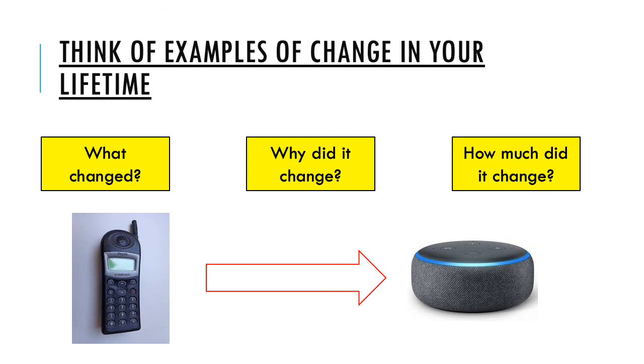So go away and have a bit of a think of some examples that you could use for this as well. And just have a go at running them through these three yellow boxes. So what is it that's changed? Why is it that it's changed and how much has it changed? And if you need to go back and look at bits of these videos that we've done, so introductory video one, two and three, that should help you with this. See you all soon. Bye.